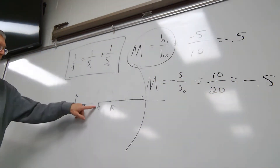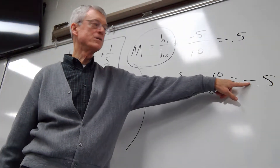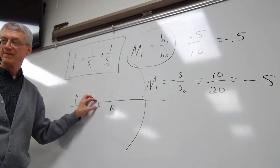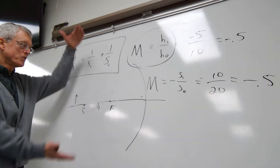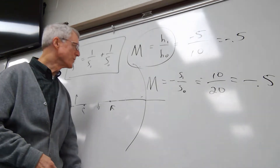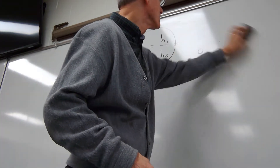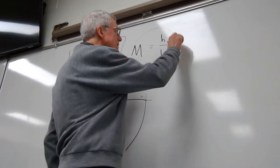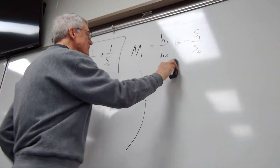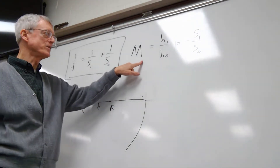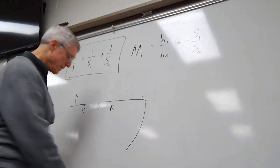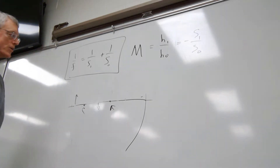If the image is smaller, M is less than 1. If the image is larger, magnification is greater than 1. So you've got two equations to remember for solving curved mirrors: the mirror equation and the magnification equation. Those are the two things to know and know how to use for curved mirrors.